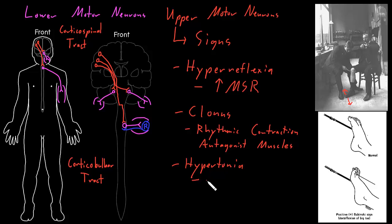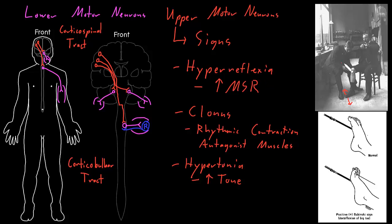The next upper motor neuron sign is hypertonia — increased tone of skeletal muscles — which is the opposite of the lower motor neuron sign of hypotonia. We don't fully understand why upper motor neuron dysfunction causes increased muscle tone. One possibility is that it's related to hyperreflexia: when a doctor moves a relaxed limb, pulling on the muscles stretches them and activates the muscle stretch reflex, causing resistance. But we're not totally sure about this.